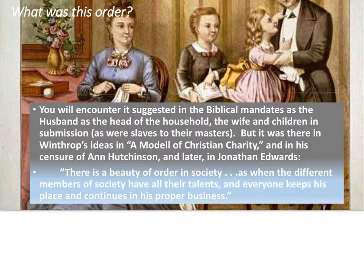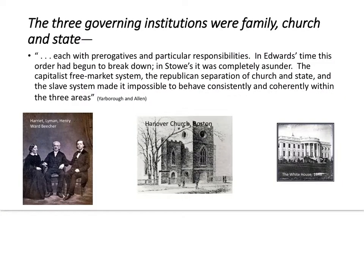Everyone in their place — in other words, Stowe was a conservative. The three governing institutions were family, church, and state, each with prerogatives and particular responsibilities. In Jonathan Edwards' time, this order had begun to break down. In Stowe's, it was completely asunder. The capitalist free market system, the republican separation of church and state, and the slave system made it impossible to behave consistently within all three areas. She was trying to knit together an order that had fallen apart.